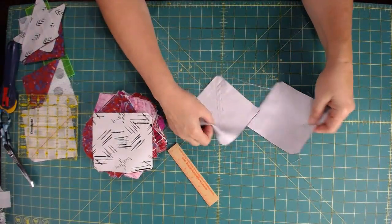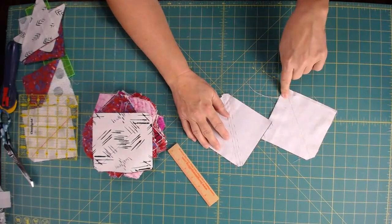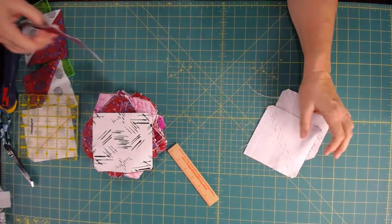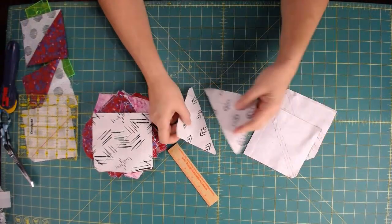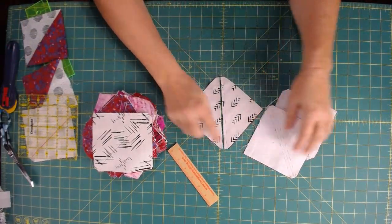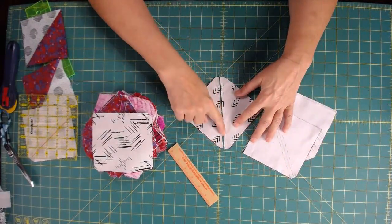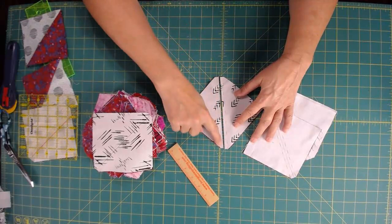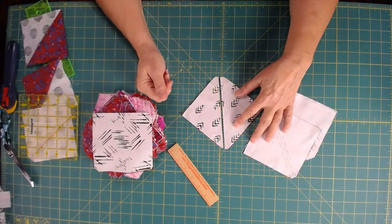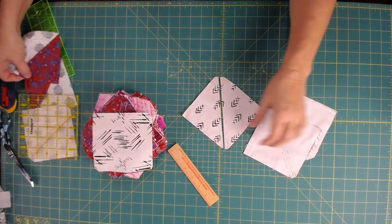Once we have this done, we've sewn our seams on both sides. Then we're going to cut them in half. We're going to cut right on this drawn line in the center. You can see here, there's the sewn line, and I cut right down the middle.